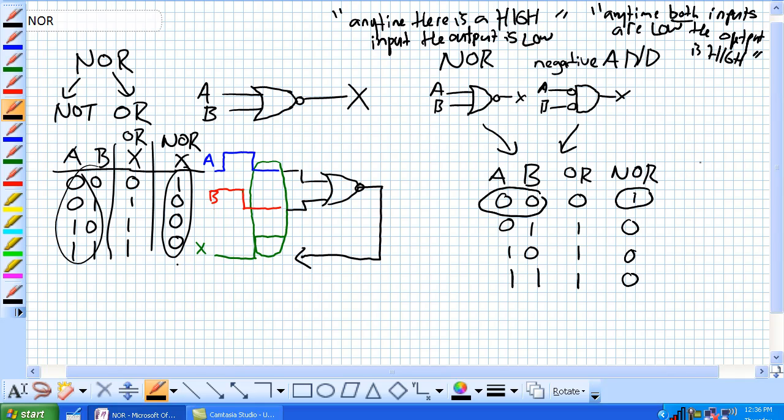Okay, for a NOR, any time there is a high input, the output is low. There you go. That's the verbiage for that portion of it. They're the same thing, NOR and a negative AND.